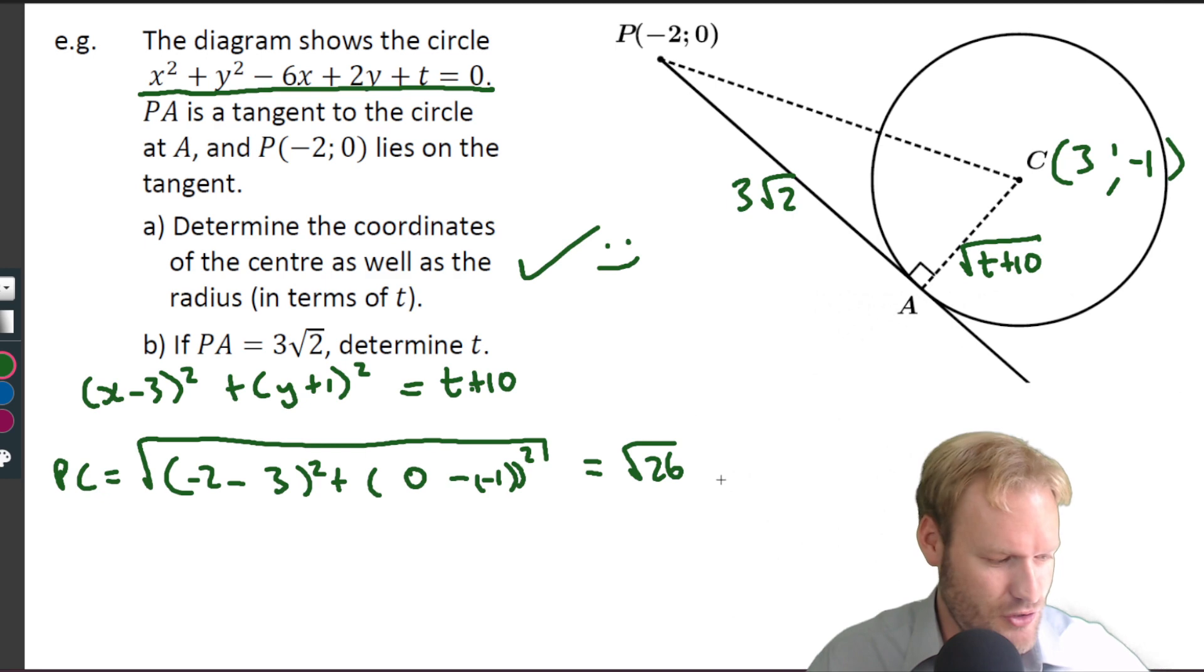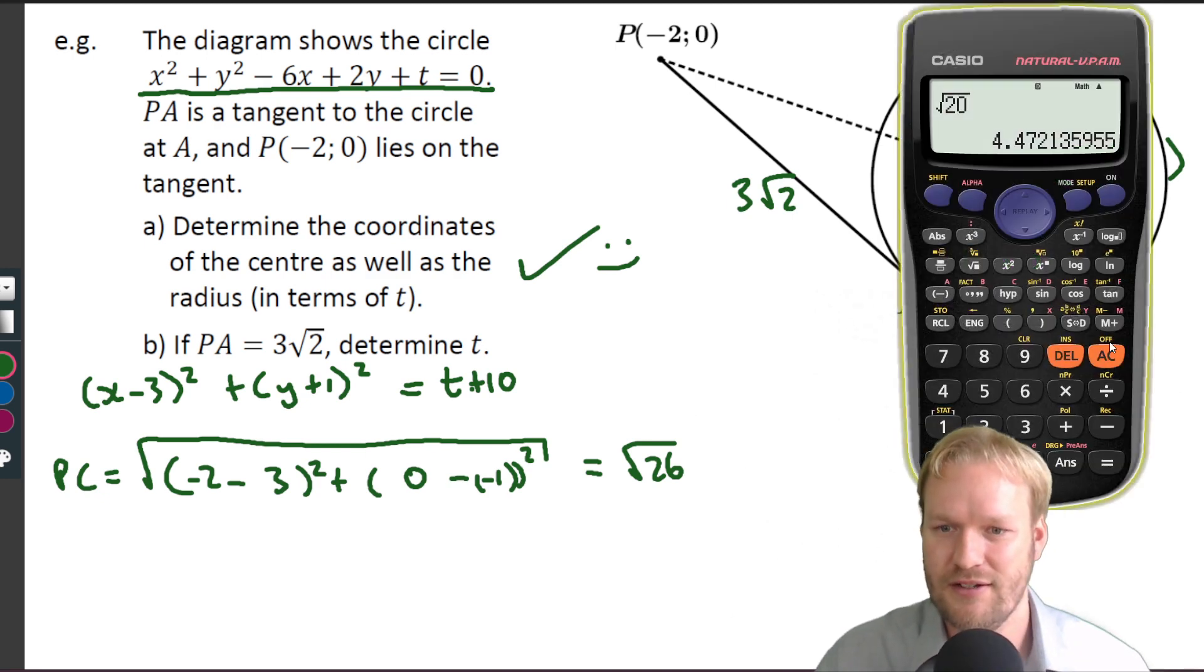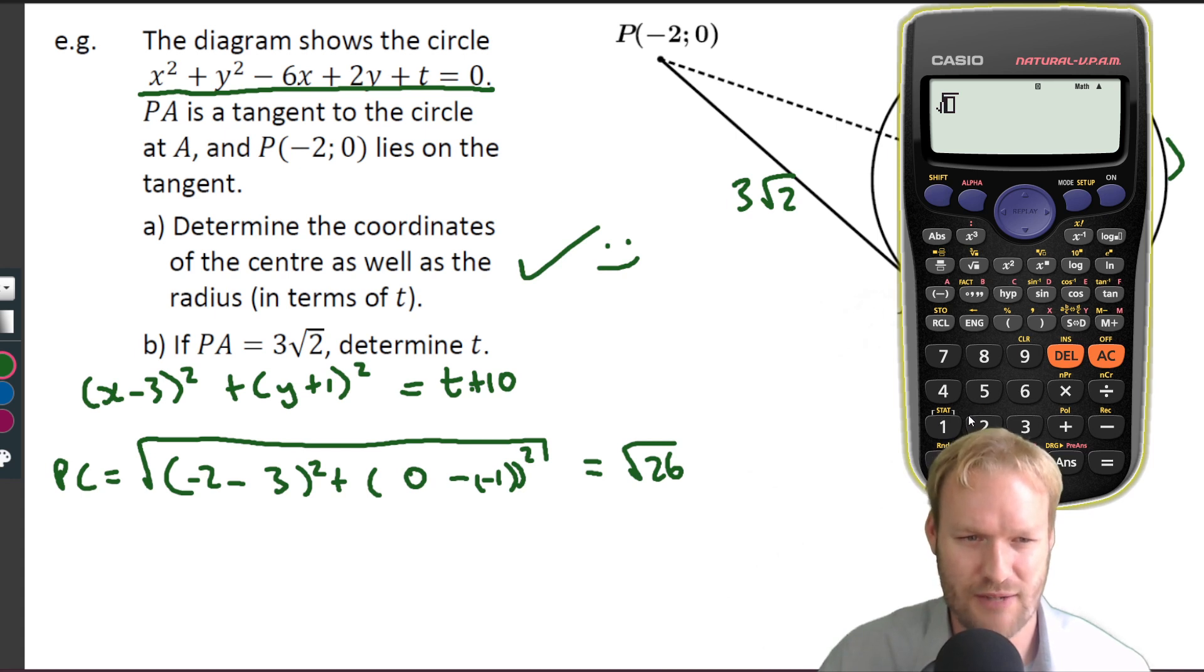I'm just going to check myself on the calculator. Well, -2 minus 3, I'm very sure is -5, and that's going to be 25. And plus 0 minus -1 is 1, 1 squared definitely is 1. Square root 26.